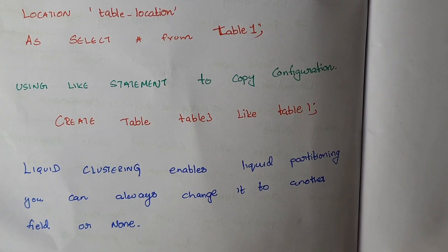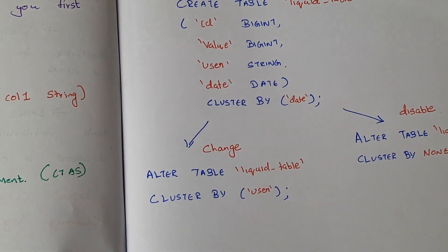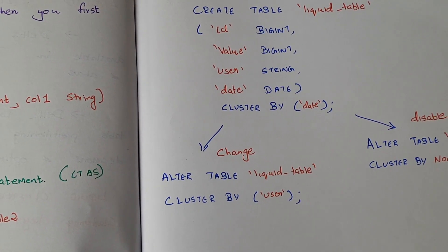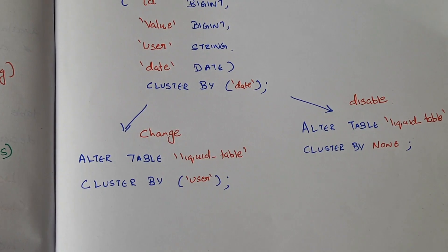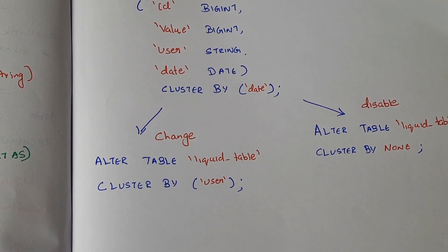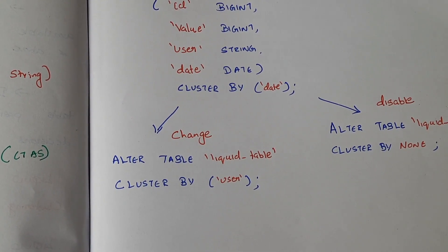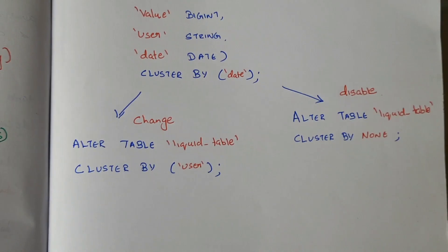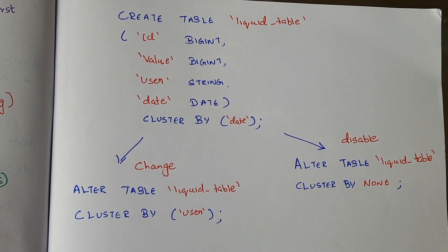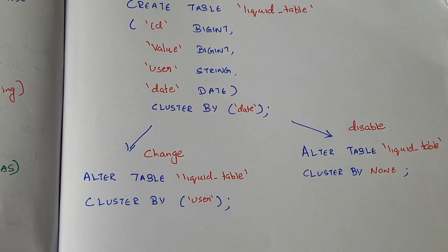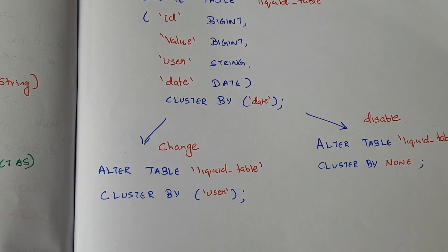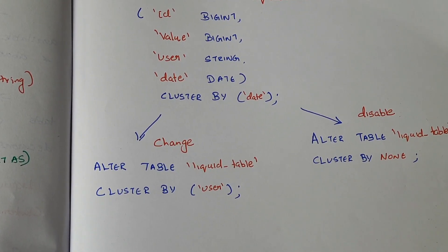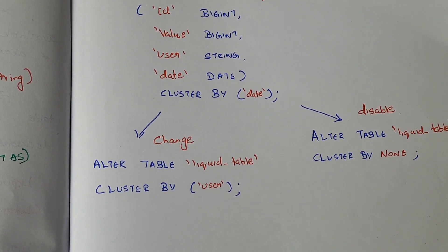Here's an example SQL query: CREATE TABLE liquid_table with columns id, value, user, date, and CLUSTER BY the desired column. To change the clustering key, use: ALTER TABLE liquid_table CLUSTER BY user — this changes the partition from date to user. To disable liquid clustering entirely, use: ALTER TABLE liquid_table CLUSTER BY NONE. This gives an intro to liquid clustering in Databricks; we'll cover advantages and more details in the next session. Thank you.